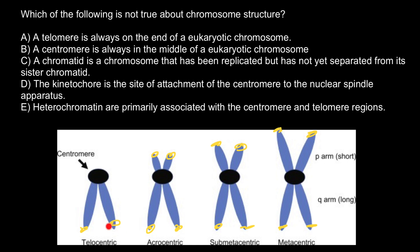The centromere can be in a telocentric chromosome, where only one arm is visible and there is no short arm. But for example, in an acrocentric chromosome, we see both a long arm and a short arm present, and the centromere is not in the center.